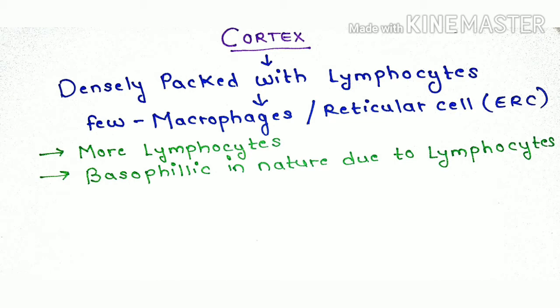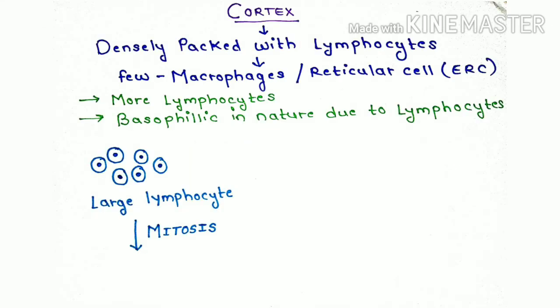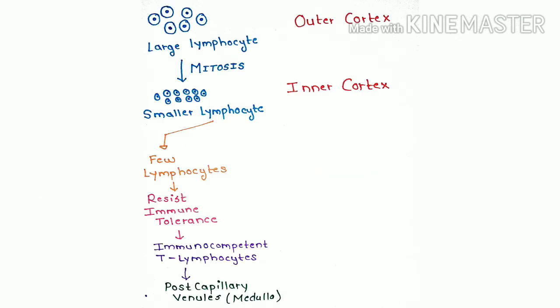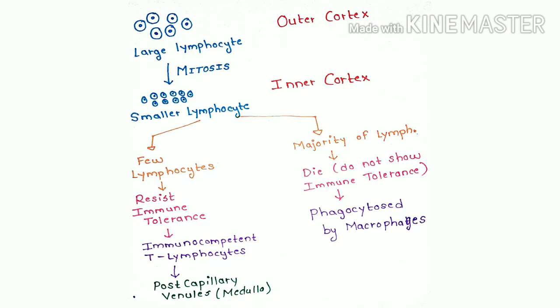Now let's talk about the cortex. The cortex is densely packed with lymphocytes. A few macrophages and reticular cells are also seen in the cortex. More lymphocytes are present here, making it basic in nature. Large lymphocytes are found in the outer cortex and undergo mitosis to produce smaller lymphocytes, which are pushed deeper into the inner cortex. A vast number of lymphocytes are produced in the inner cortex. Only a few lymphocytes pass immunotolerance and leave the thymus as immunocompetent T lymphocytes via post-capillary venules in the medulla. The majority of lymphocytes that do not show immunotolerance die within the thymus itself and are later phagocytosed by macrophages.